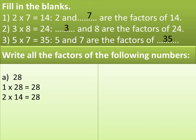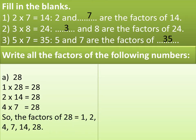Is 28 divisible by 3? No. Take the next number 4. Is 28 divisible by 4? Yes, and the product can be written as 4 multiplied by 7 equals 28. Then move on to 5. Is 28 divisible by 5? No. Take 6. Is 28 divisible by 6? No. Then we move on to 7, which is already covered. When we know we have covered all possible products of 2 numbers, stop. So the factors of 28 are 1, 2, 4, 7, 14, and 28.